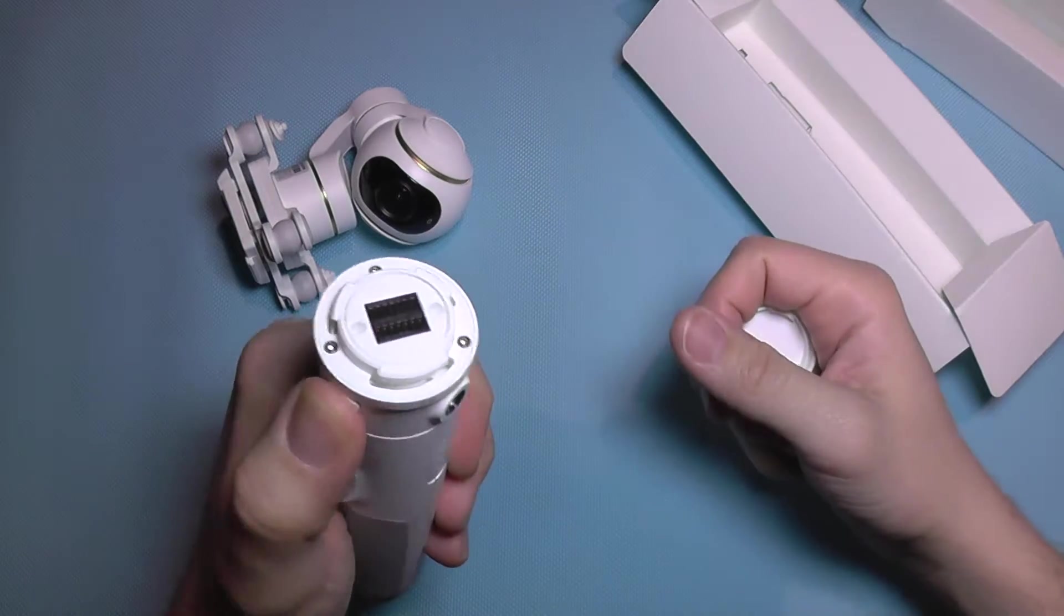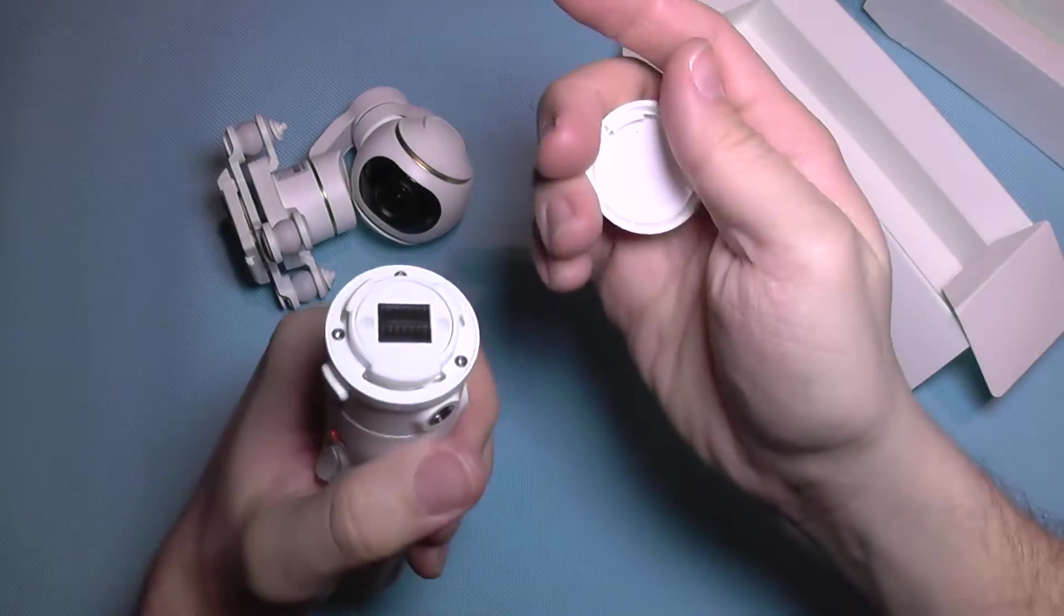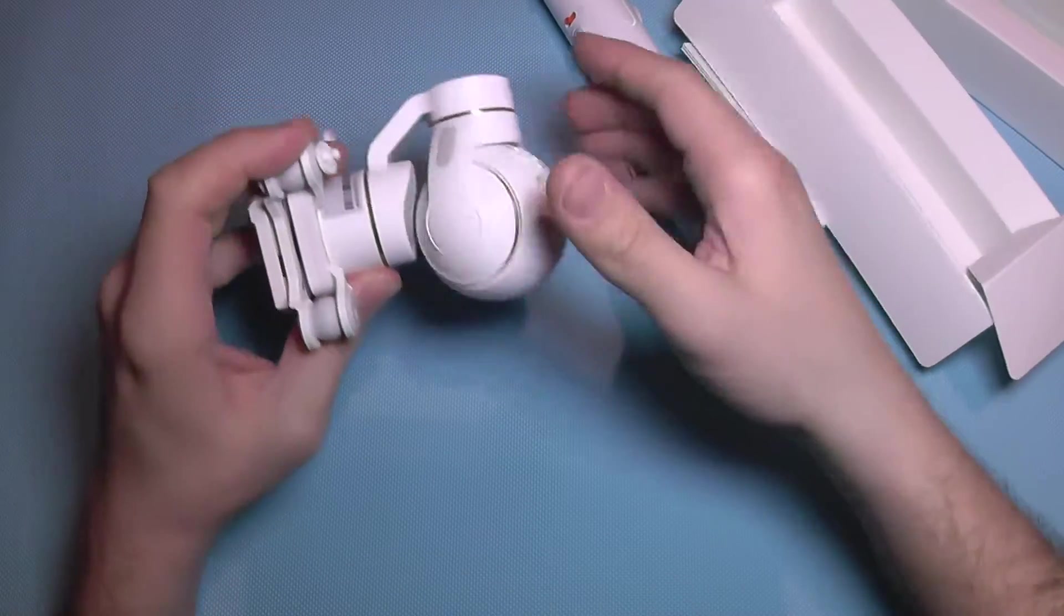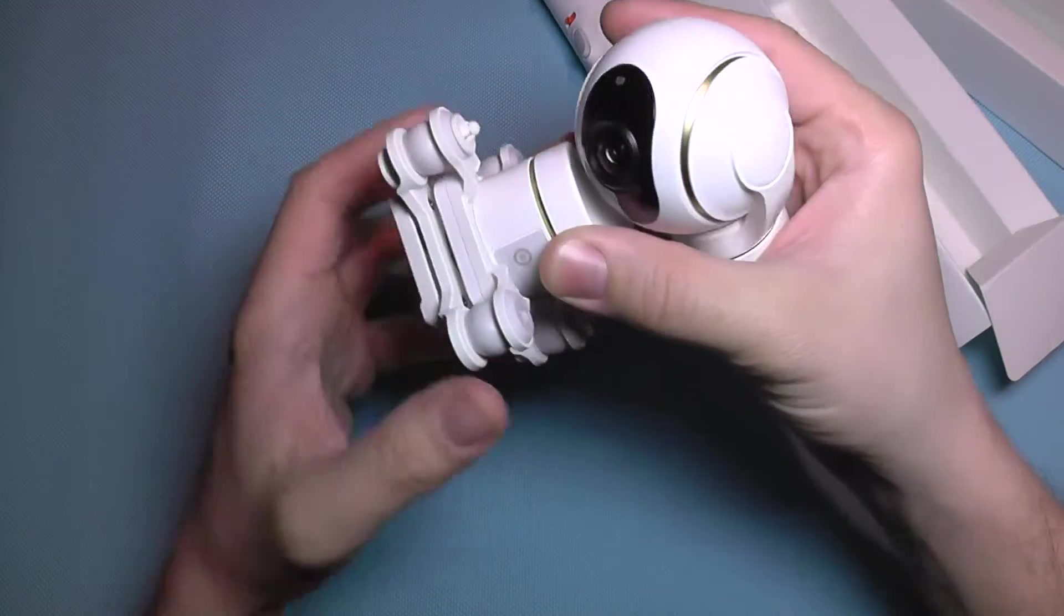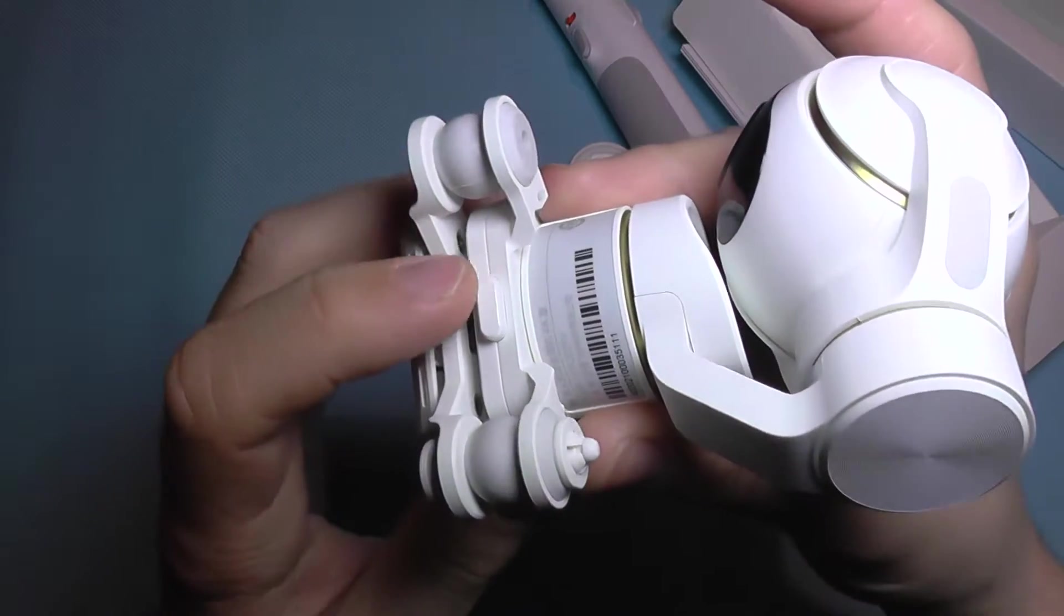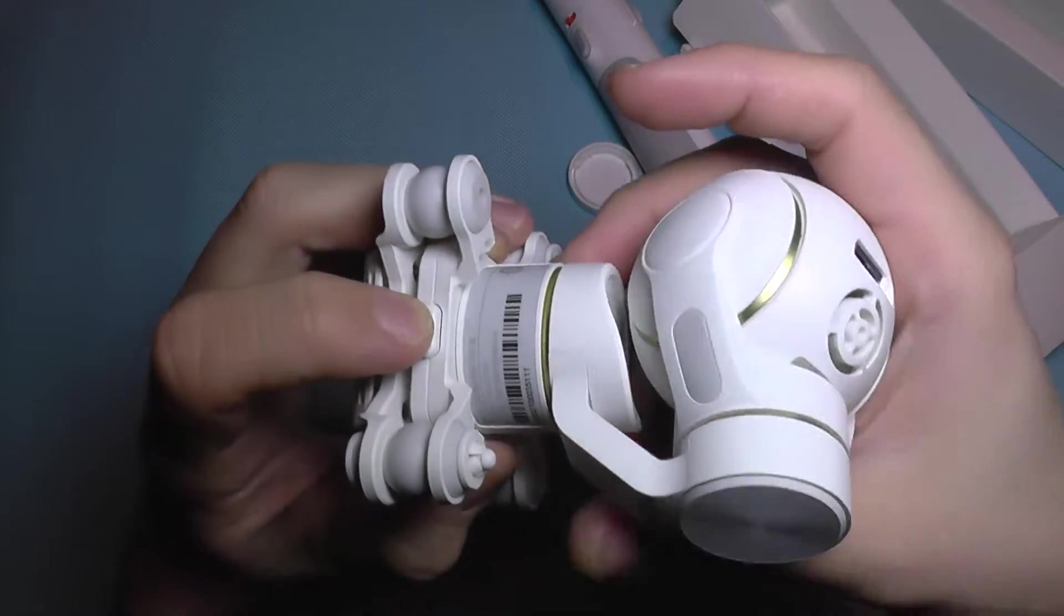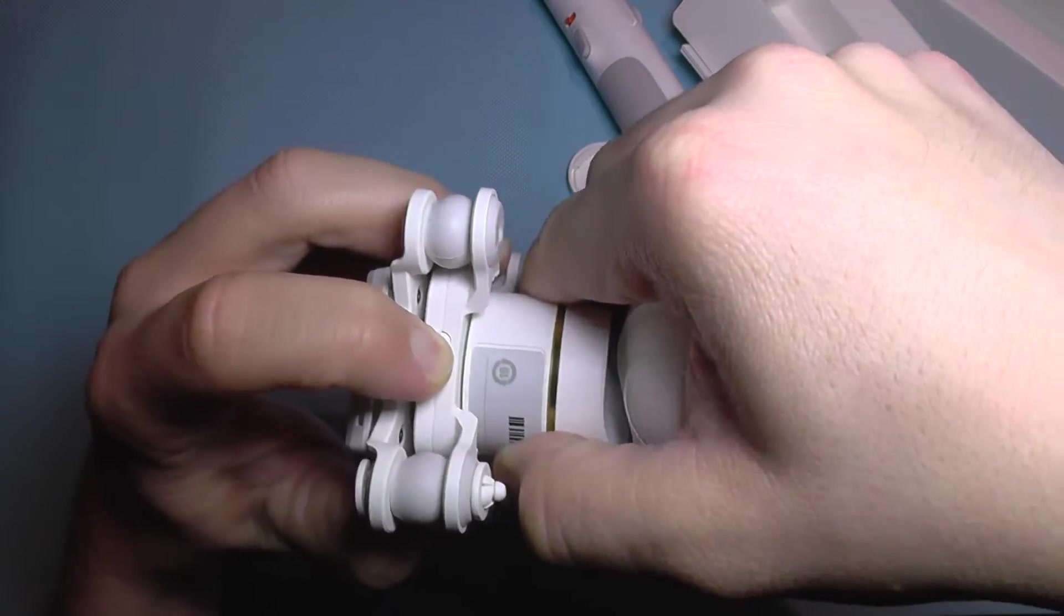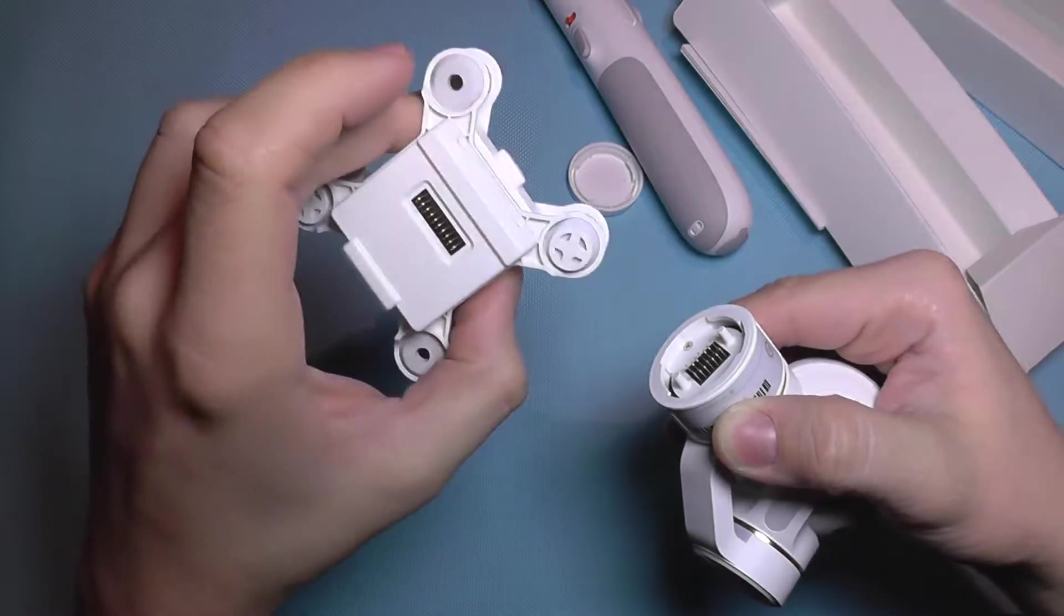This will untwist, you just press this button here, untwist it and you get access to the contacts. The same now applies for the camera. It somewhere has a push button, here it is. We are going to push this button and unscrew the camera. It will come off from the dampening plate of the gimbal.